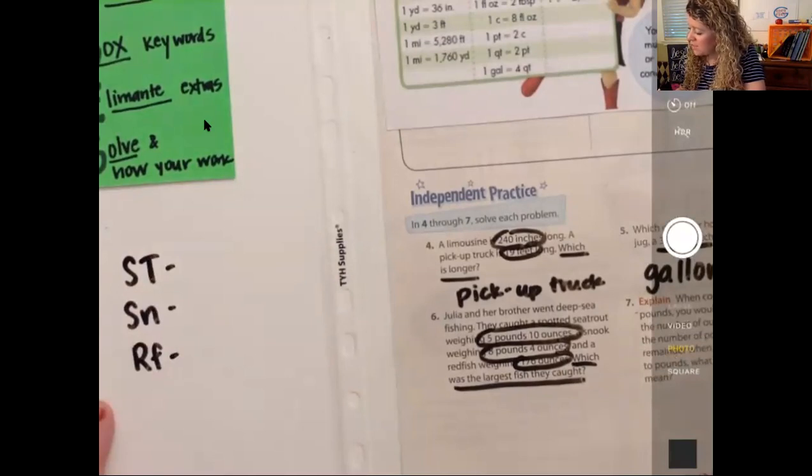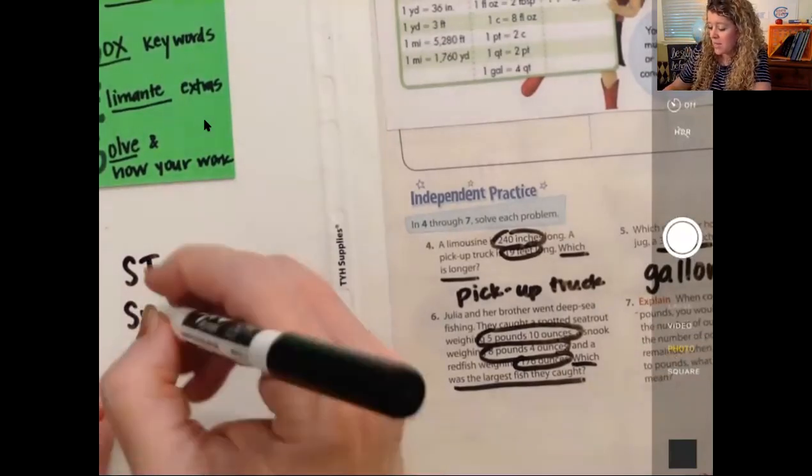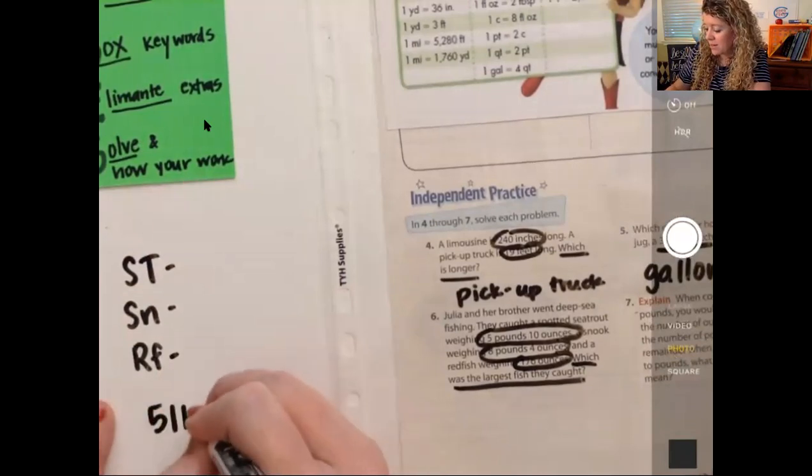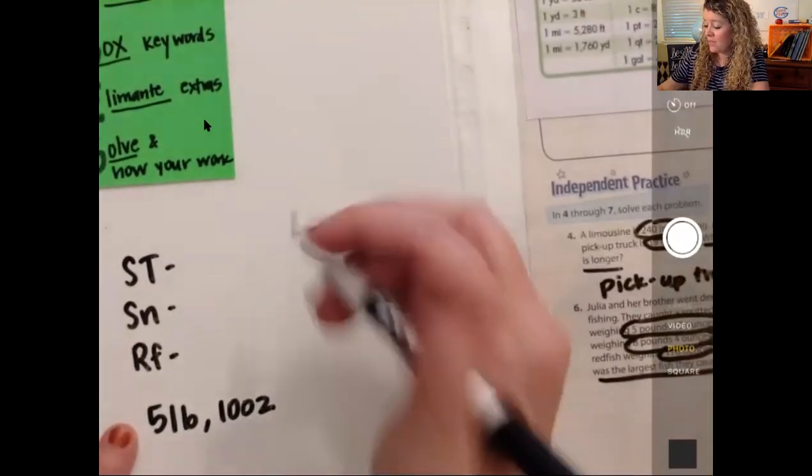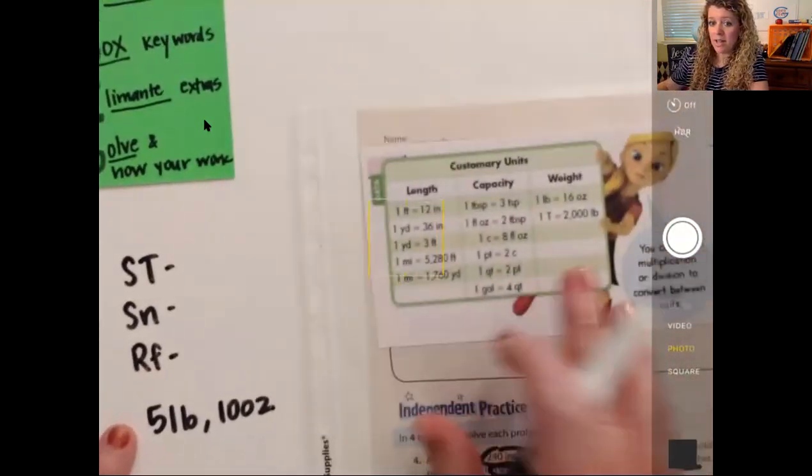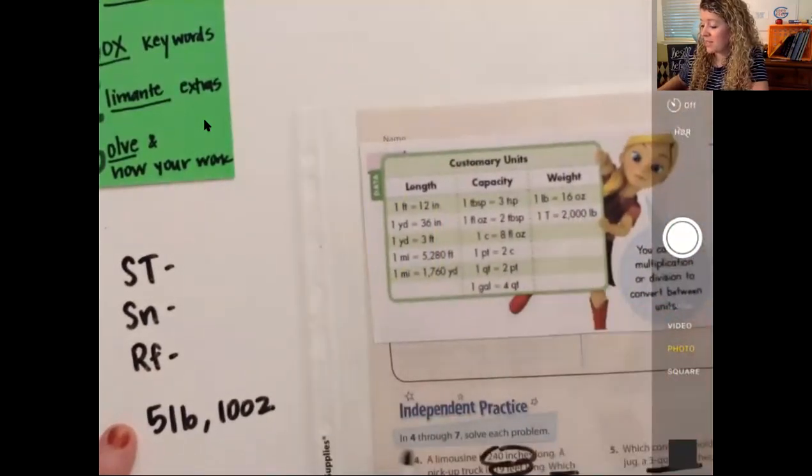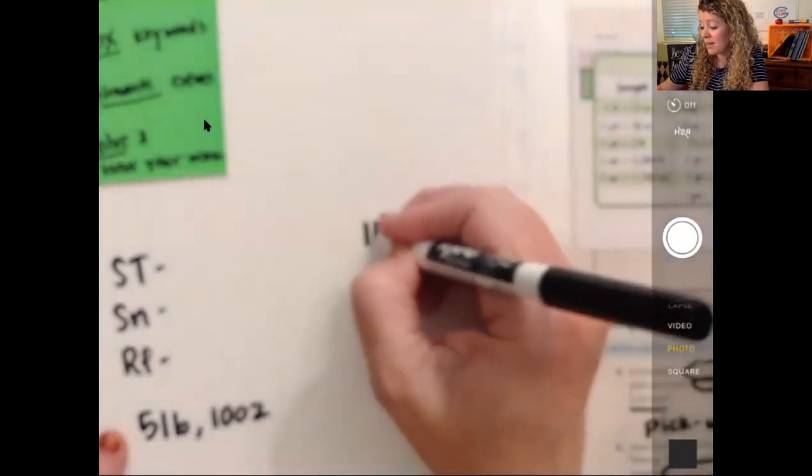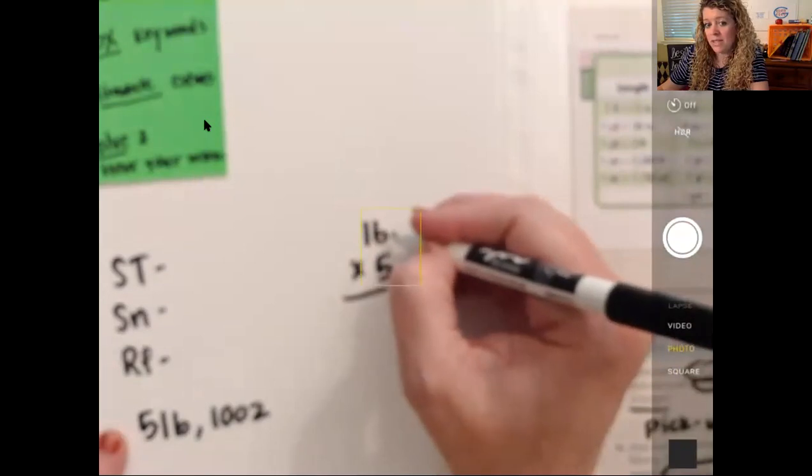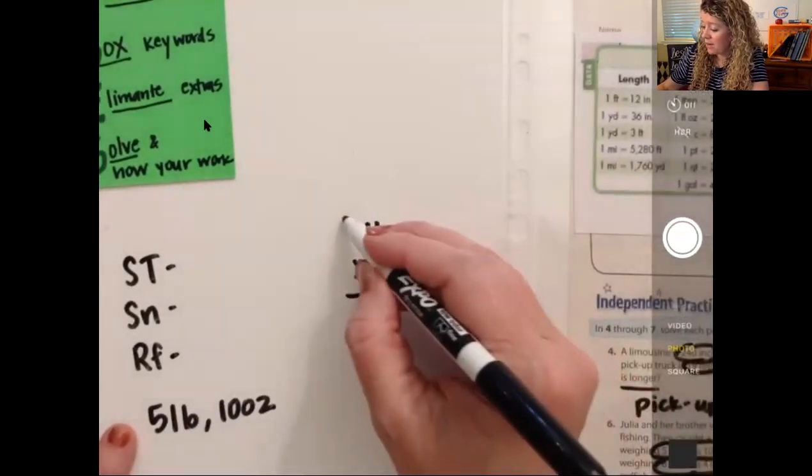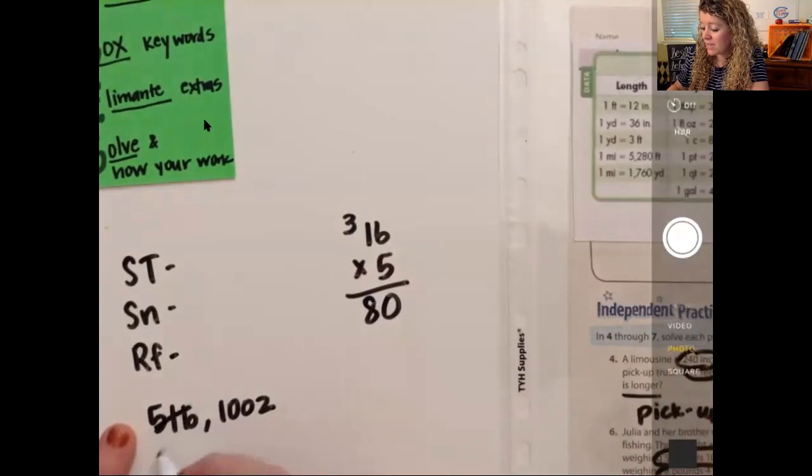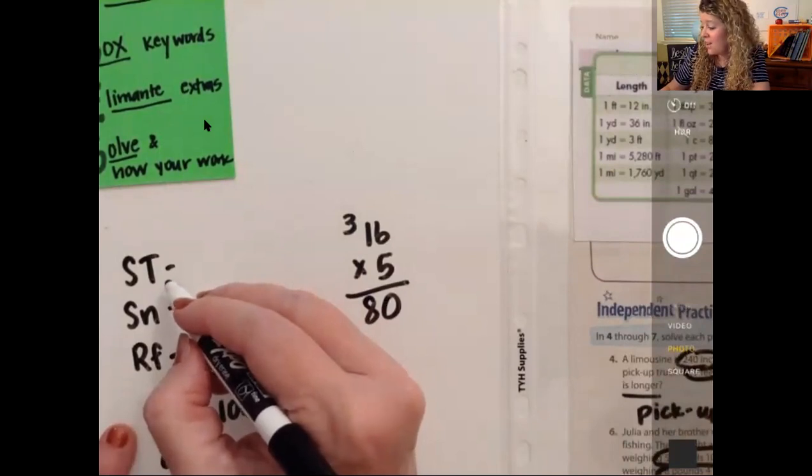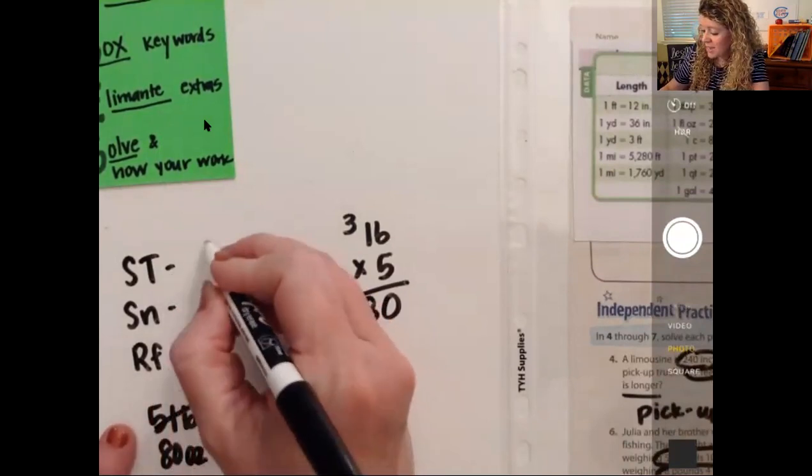Okay, the sea trot was five pounds, 10 ounces. So five pounds plus 10 ounces. Now, how much is in five pounds? Well, to figure that out, we have to look up here. In each pound, there are 16 ounces. So we have to do 16 times five. Six times five is 30, carry your three. Five times one is five, plus three is eight. So five pounds is 80 ounces plus 10 ounces. So we can do that in our head. We know the sea trout is 90 ounces. We already know that the redfish was 176 ounces.